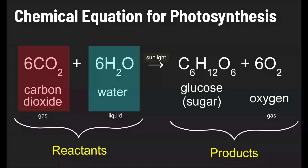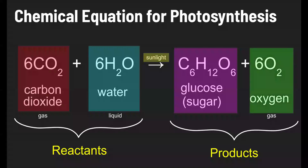And they also absorb sunlight. So those are the things that go into the plant: carbon dioxide, water, and sunlight. And what comes out, or what's produced by the plant, is the sugar glucose and oxygen, which is a gas that gets released into the atmosphere. That oxygen is what humans and other organisms breathe. This is the chemical equation for photosynthesis.